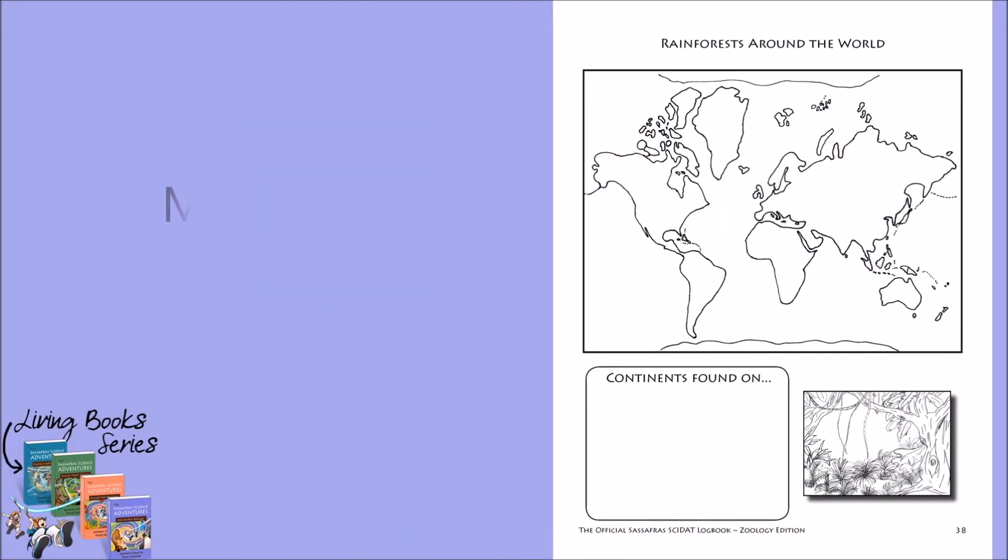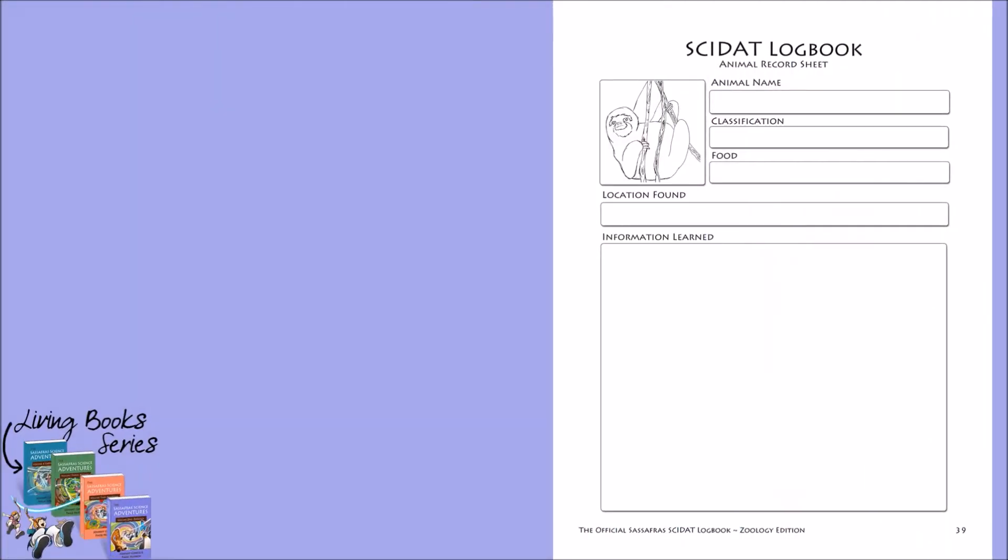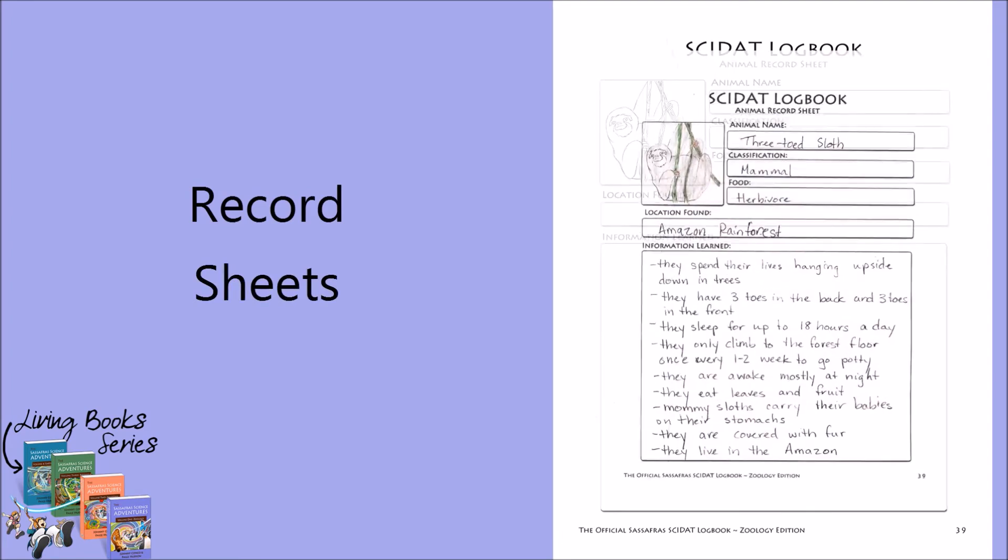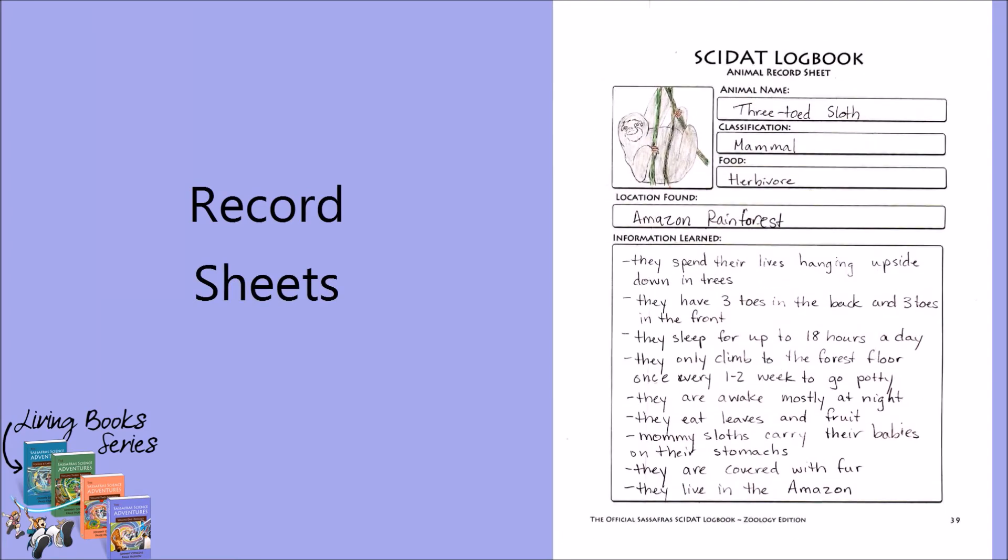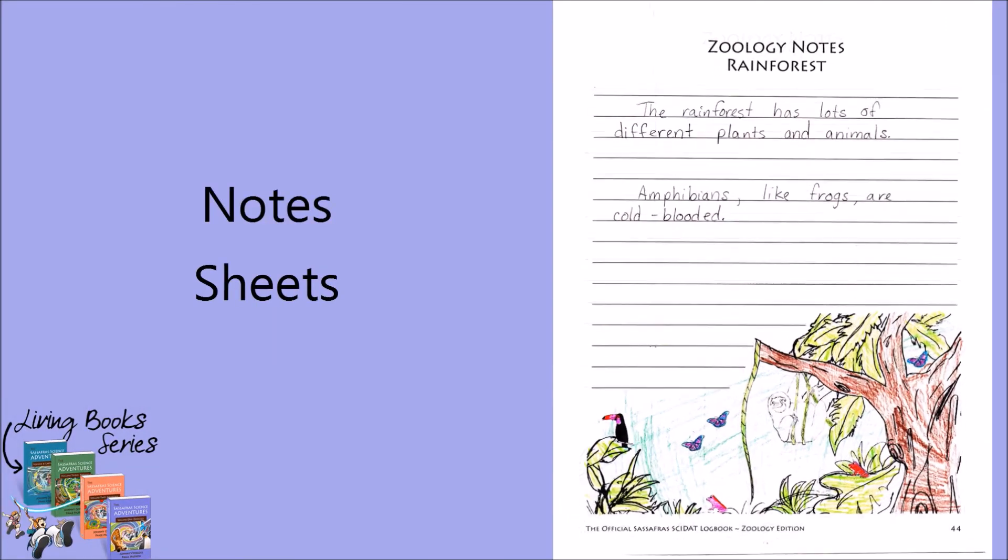This is followed by the geography sheet, where students can do a bit of map work related to what they've read. After this, you will find the four individual record sheets, where the student can record what they've learned about the specific topics from each chapter. This is followed by the note sheet, where students can record any additional information you cover from the location.